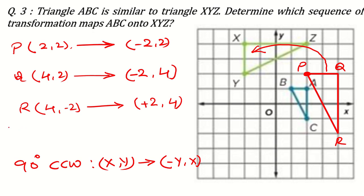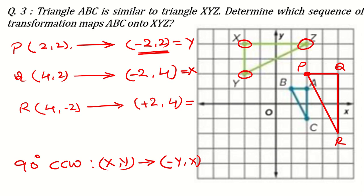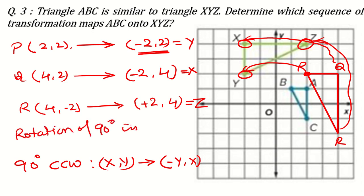So applying the formula, P(2,2) → (−2, 2), Q(4,2) → (−2, 4), R(4,−2) → (2, 4). Checking: (−2, 2) is point Y, (−2, 4) is point X, and (2, 4) is point Z. So P maps to Y, Q maps to X, and R maps to Z. This confirms the rotation works — the transformation is a rotation of 90 degrees counter-clockwise about the origin.